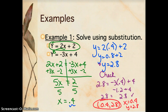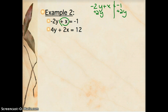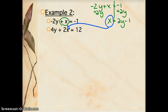This next one is a little bit trickier: negative 2y plus x equals negative 1, and 4y plus 2x equals 12. No variable is alone right now, so I need to think about which variable is easiest to isolate. In the first equation, x doesn't have an extra coefficient, so it's probably the easiest to get by itself. I'll add 2y to both sides: x equals 2y minus 1. Now I can substitute 2y minus 1 in for x in the second equation.